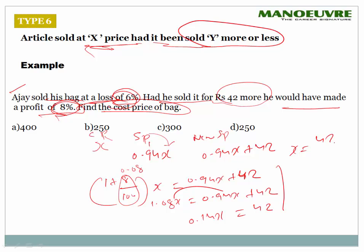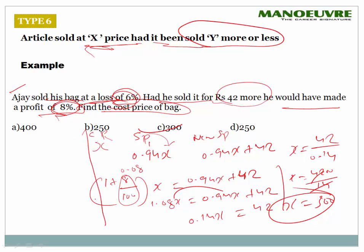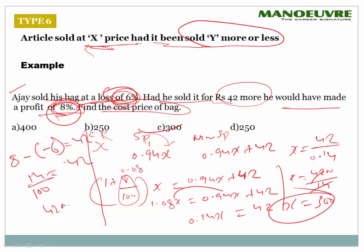You can also apply the shortcut: profit percent (positive) + loss percent (positive) divided by 100 gives the percentage of cost price corresponding to 42 rupees. So 8 + 6 = 14, meaning 14% of CP = 42, hence CP = 4200/14 = 300 rupees.